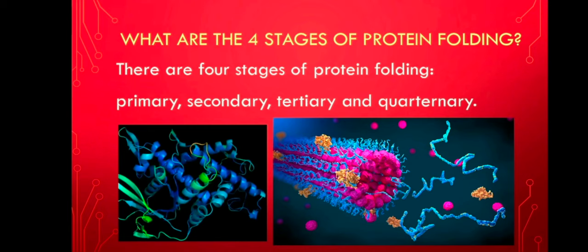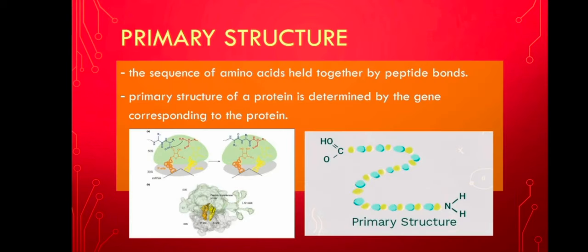What are the four stages of protein folding? There are four stages of protein folding that includes primary, secondary, tertiary, and quaternary. The first structure, which is the primary structure, is the sequence of amino acids held together by peptide bonds. The primary structure of a protein is determined by the gene corresponding to the protein.